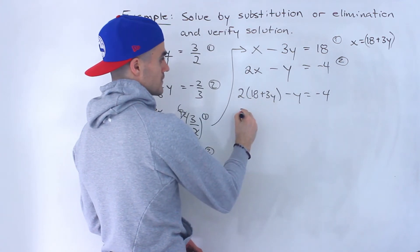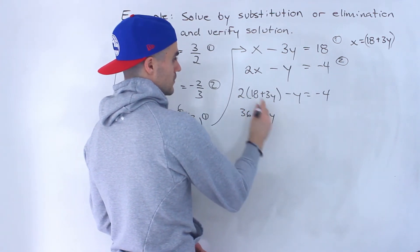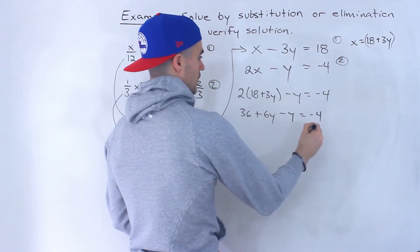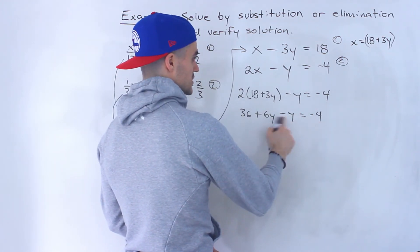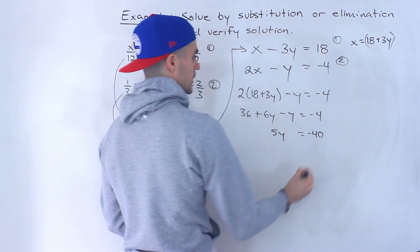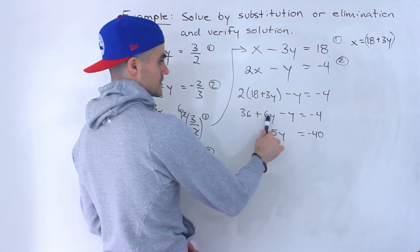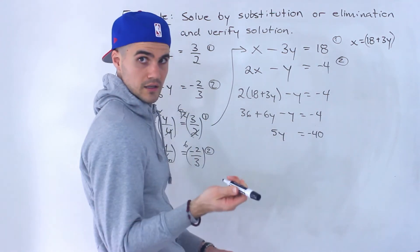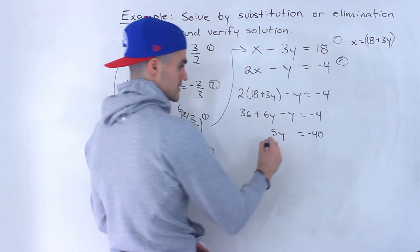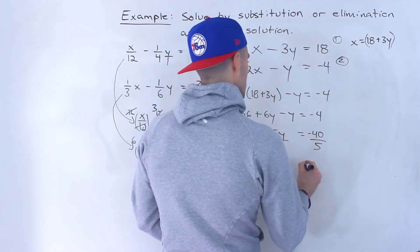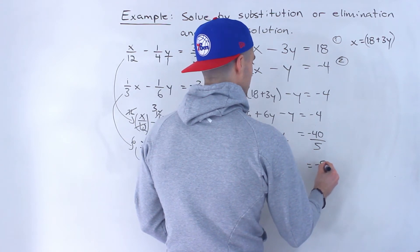So I'll have 2 times 18 plus 3y minus y equals negative 4. And then we could just solve for y. This would be 36 plus 6y right when we distribute the 2. Bring the 36 over. 6y minus y gives us 5y. Which would be negative 40. 6y minus y is 5y. And then negative 4 minus 36 gives us negative 40. So notice now we could divide by 5.